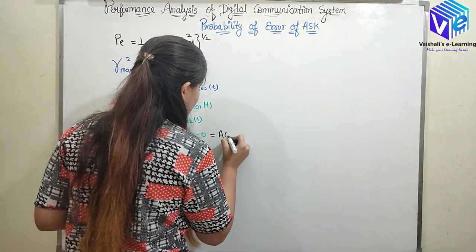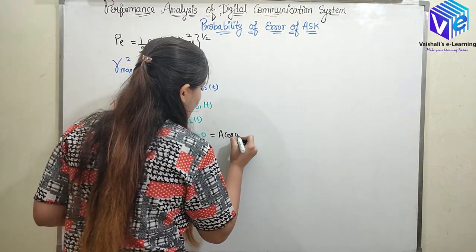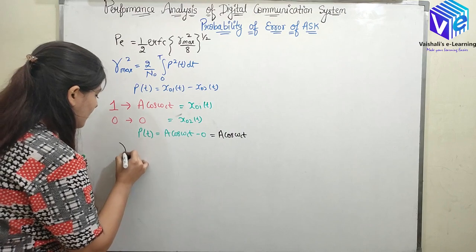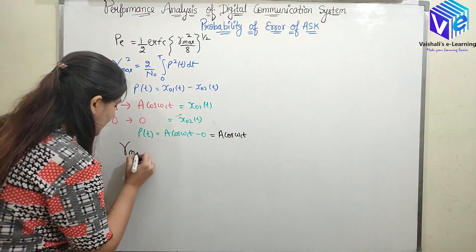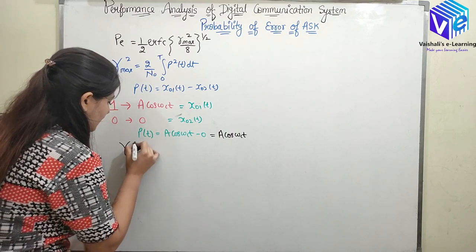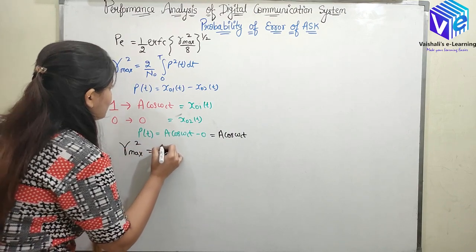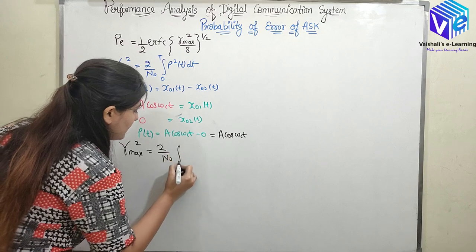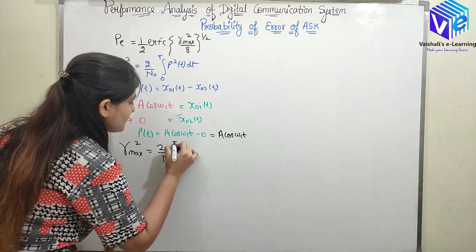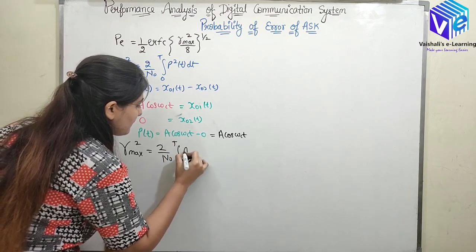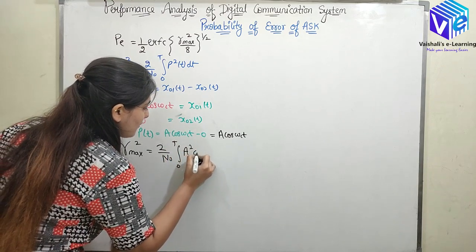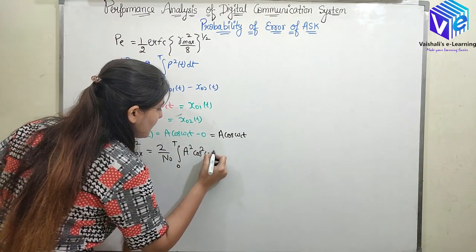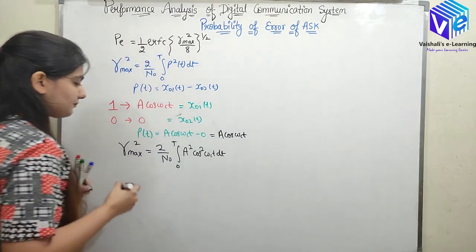Now I need to find out gamma_max². Gamma_max² would be equal to (2/N₀) × integral from 0 to T of A²·cos²(ωc·t) dt.